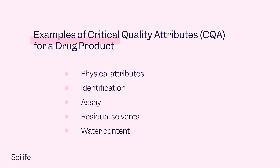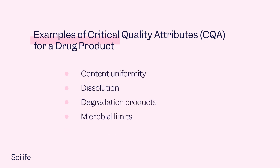For example, some critical quality attributes for a drug product are those defined in pharmacopoeial analytical monographs like the physical attributes, identification, assay, impurities, and content uniformity.